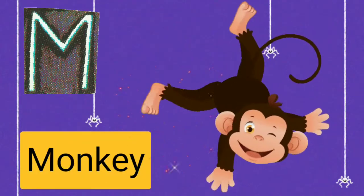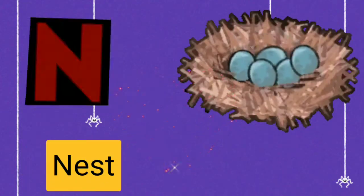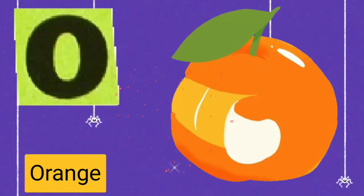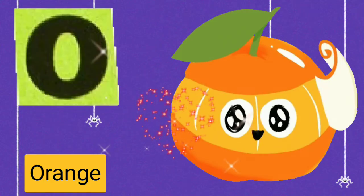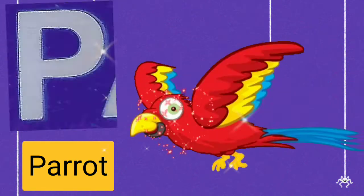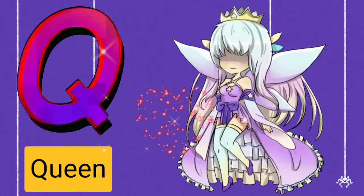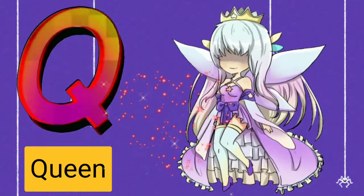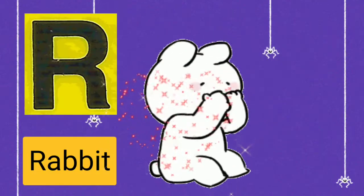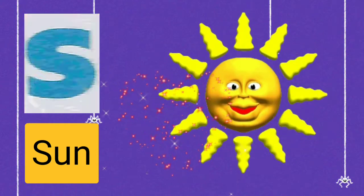M for Monkey, N for Nest, O for Orange, P for Parrot, Q for Queen, R for Rabbit, S for Sun.